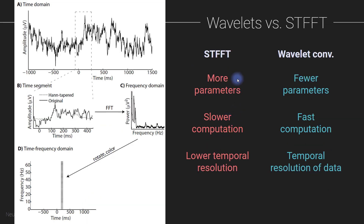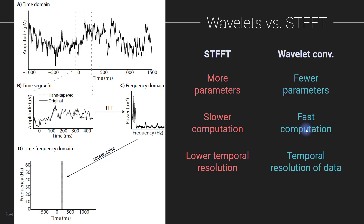Now let me compare Morley wavelet convolution with the short-time Fourier transform. Unfortunately, I don't really see any advantages for the short-time Fourier transform. There are more parameters to worry about. The computation time is slower — it's still based on the FFT, which itself is fast, but with the short-time Fourier transform, to build up a time-frequency plot, depending on the parameters you use, you might be running hundreds or thousands of FFTs. Each individual FFT is fast, but when you add them all up you're doing many, many FFTs, whereas wavelet convolution uses the least number of FFTs you can get away with.